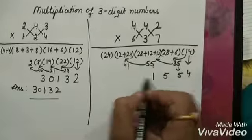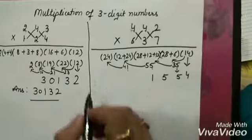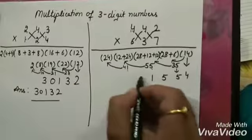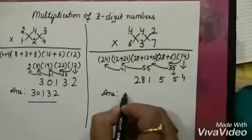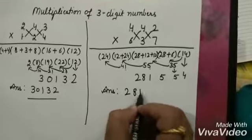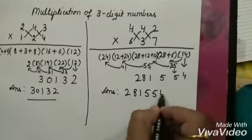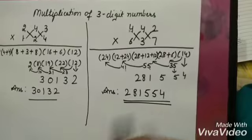This 1 we will write here. And 4 will be added to this value. 24 plus 4 is 28. So final answer is 281554. This is our final answer.